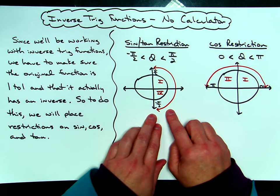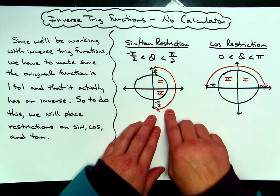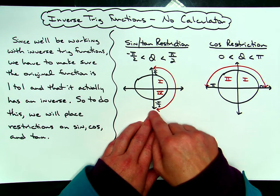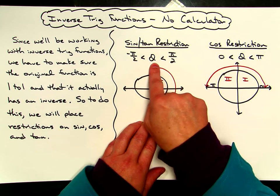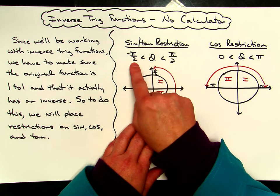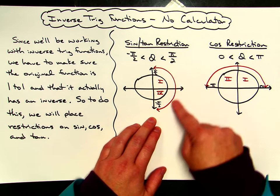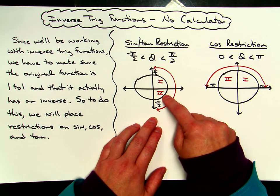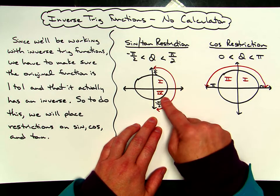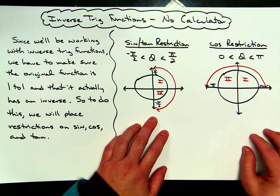This first diagram shows what the restrictions will be for our sine and tangent. When we use our unit circle to find our inverse trig functions, for sine and tangent, our restriction is going to be that theta has to be between negative pi over 2 and pi over 2. That puts us in the first and the fourth quadrant, so every answer will come from either quadrant one or quadrant four when finding the inverse trig functions of sine and tangent.